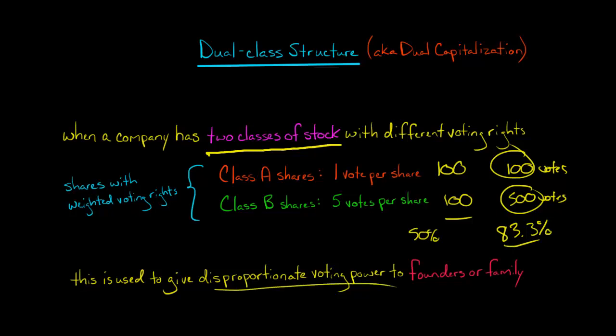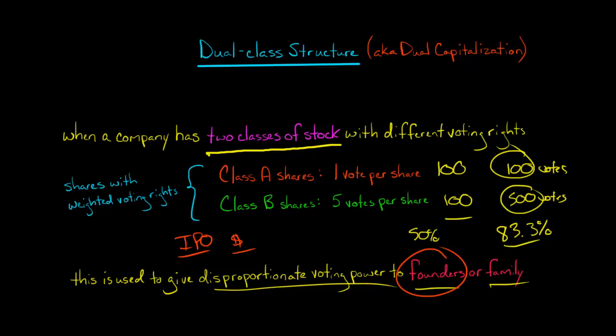This gives disproportionate voting power to a certain group, usually the company's founder or family members. For example, the founder of a tech company like Snap wanted to do an IPO to raise money, but Evan Spiegel didn't want to give up control. So they created two classes of shares to make sure the founder retains significant control over the company.